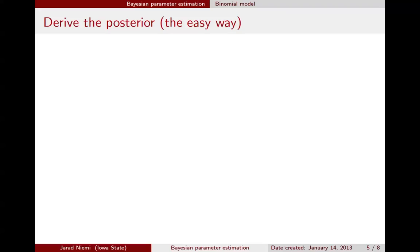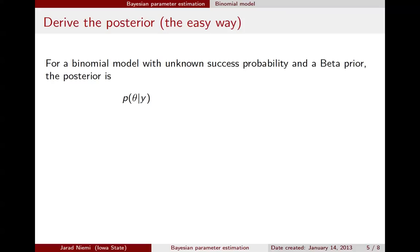All right, so the first thing to do is just to write down that the posterior is proportional to the likelihood times the prior. And remember that this proportionality constant is incorporating everything that does not have a theta in it. So when we write down the actual equation for the likelihood and for the prior, we can remove all the terms that do not include a theta. In particular, from the binomial model, we've removed the term of n choose y. And from the beta distribution, we've removed the term of 1 over that beta function. All right, that all just gets wrapped up into this proportionality constant. And the only things that are left are the terms that have a theta.